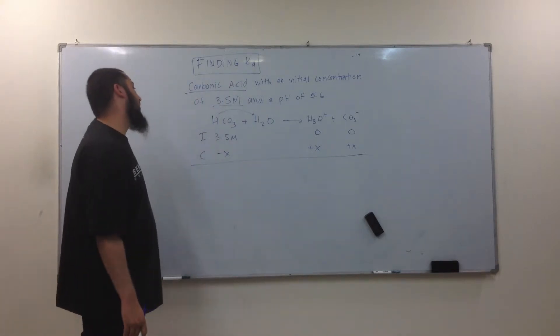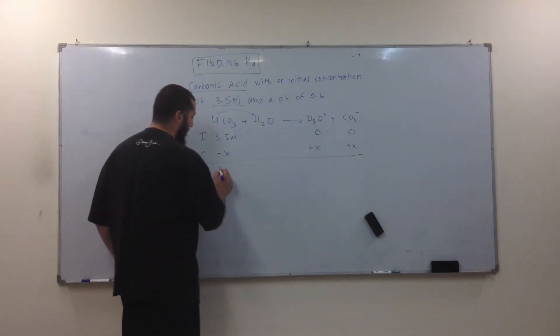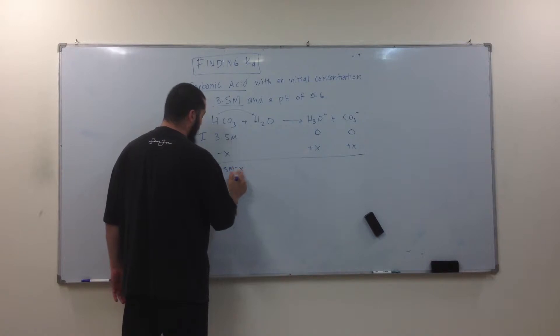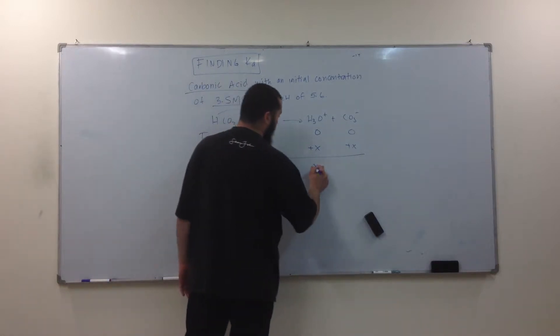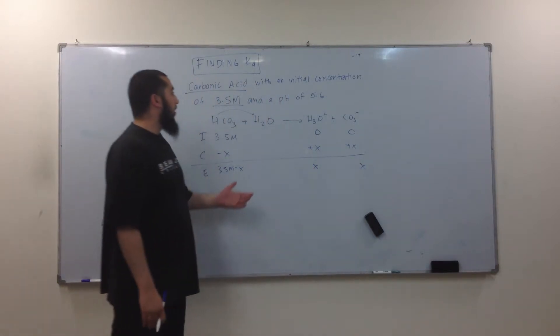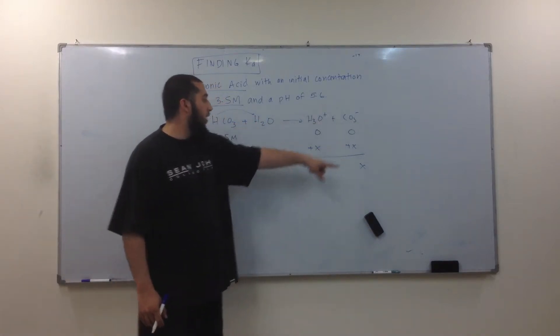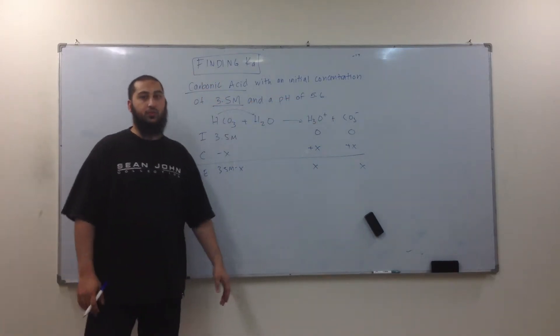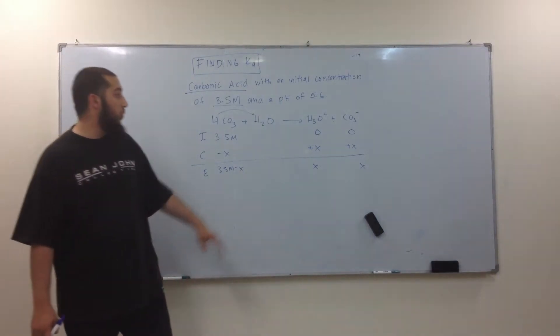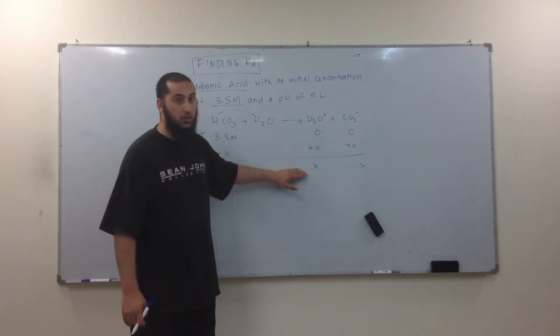Now, here's the thing. We can finish this up if you'd like. 3.5 molar minus X, right? X. This is X and X. Now, what was my pH? 5.6. What does this, where does this 5.6 belong to? H3O+. Which one? 1, 2, or 3? 3.